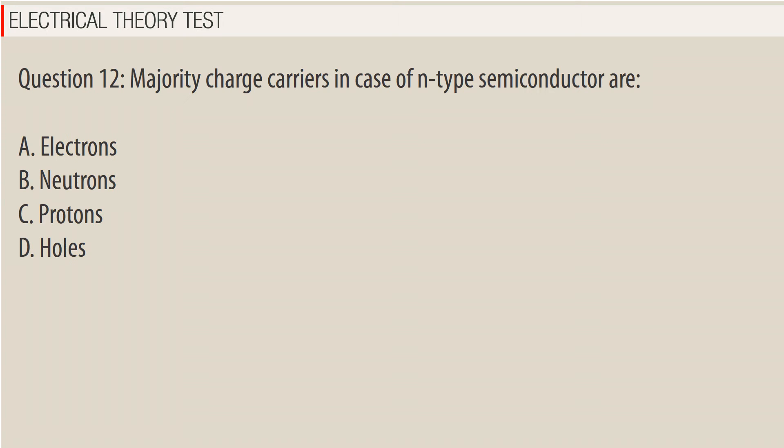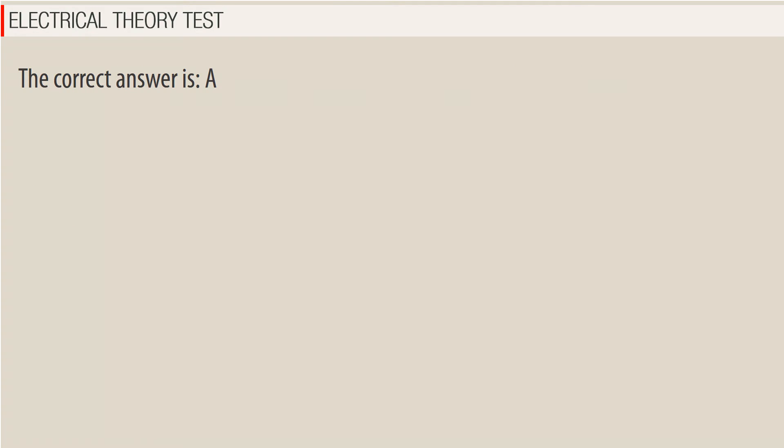Question 12. Majority charged carriers in case of N-type semiconductor are: A. Electrons. B. Neutrons. C. Protons. D. Holes. The correct answer is A — Electrons.